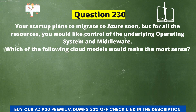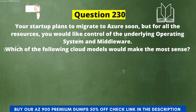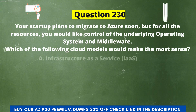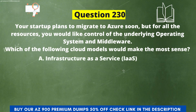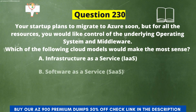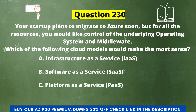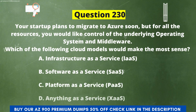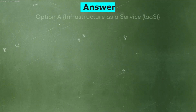Next question: Your startup plans to migrate to Azure soon, but for all the resources you would like control of the underlying operating system and middleware. Which of the following cloud models would make the most sense? The options are: A) Infrastructure as a Service, B) Software as a Service, C) Platform as a Service, D) Anything as a Service. The correct answer is option A, Infrastructure as a Service.